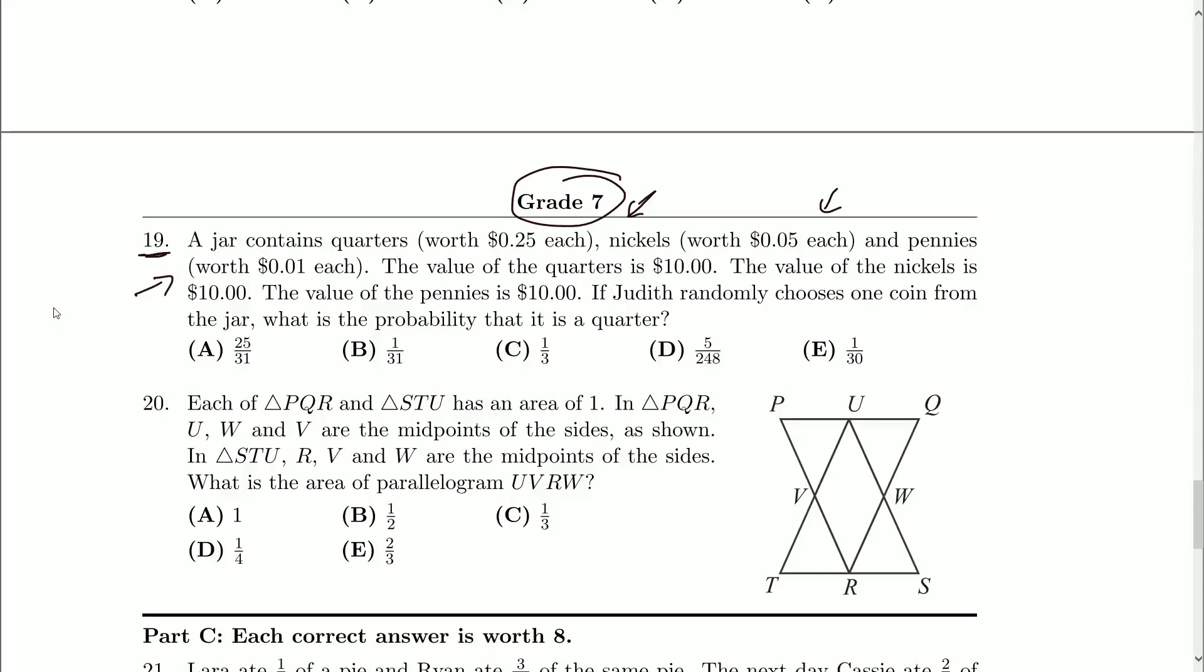The value of the quarters is $10, so I could probably figure out how many quarters I had. The value of the nickels is also $10, and the value of the pennies is $10. If Judith randomly chooses one coin from the jar, what is the probability that it's a quarter?